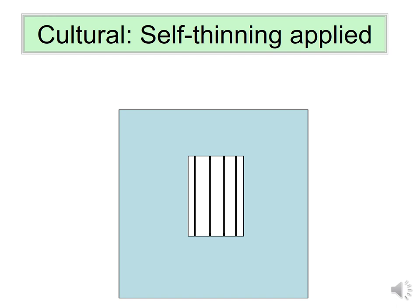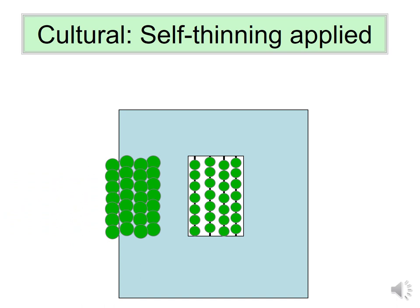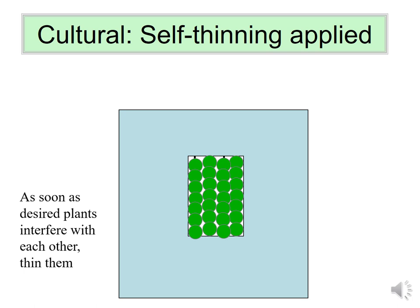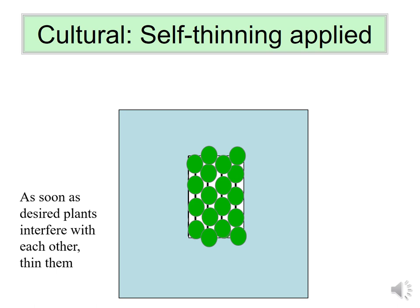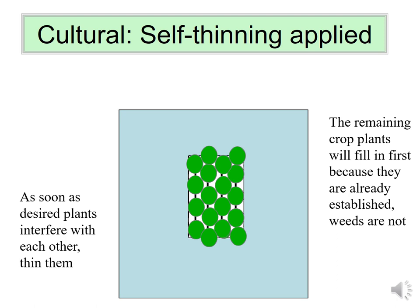Planting earlier relies on a concept called self-thinning. You plant a crop at a higher-than-optimal density — for example, if corn requires 30,000–40,000 seeds per acre, you might plant 50,000. This works best when seed is cheap. The idea is to plant at high density, let the crop come up and capture all resources before weeds can get there, then thin the crop down to its optimal density. The established plants will fill in those gaps before weeds can take hold.